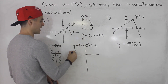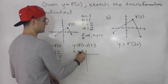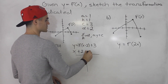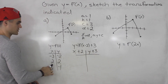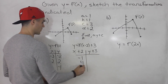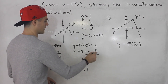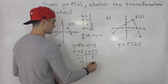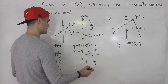So x over k: x over one is just x, plus d, and the d value is two. Then we have a times y plus c: the a value is one times y, which is just y plus c, which is three. So we're taking all the x values and adding two: negative three plus two gives us negative one, two plus two gives us four, and three plus two gives us five. Then y plus three: negative two plus three gives us one, two plus three gives us five, and negative one plus three gives us two.